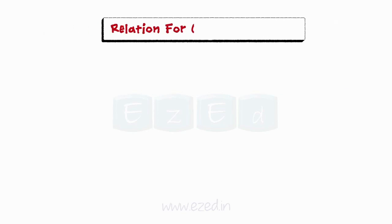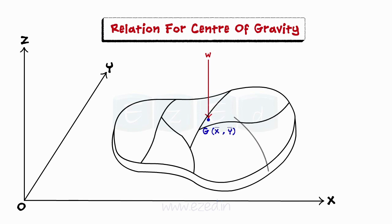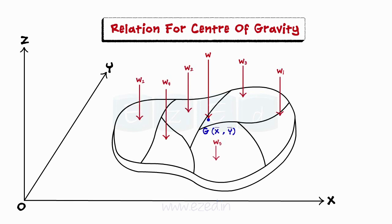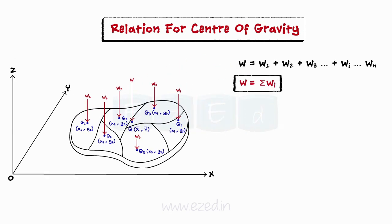Let us now learn the relation to find the center of gravity. Consider a body of weight W as shown in the figure. The center of gravity of this body is at point G, with coordinates x-bar, y-bar. Let us now split the body into n parts arbitrarily. Each part will have its own individual element weight wi, acting through its center of gravity located at gi, having coordinates xi, yi. All the individual weights w1, w2, w3, wi, wn together form a system of parallel forces. The resultant weight of the body, that is W, is therefore given by the summation of the weights of all the parts of the body.